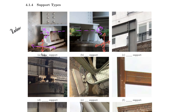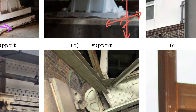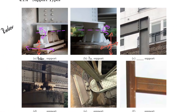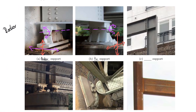We call this a pin, because the only thing that is free is the rotation — it rotates about that pin. Think of this axis as the pin. The roller also has a pin, but it is additionally allowed to roll along that axis, whereas the pin support is not.